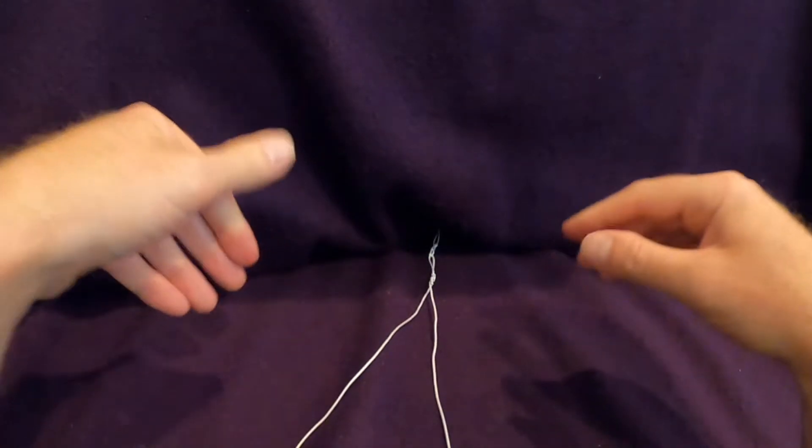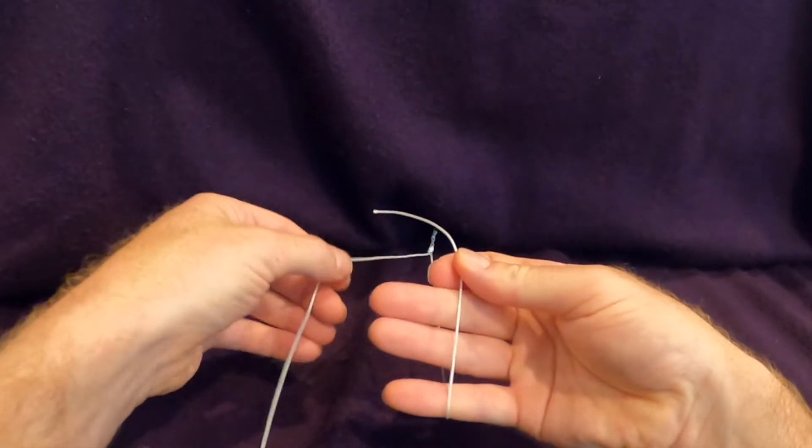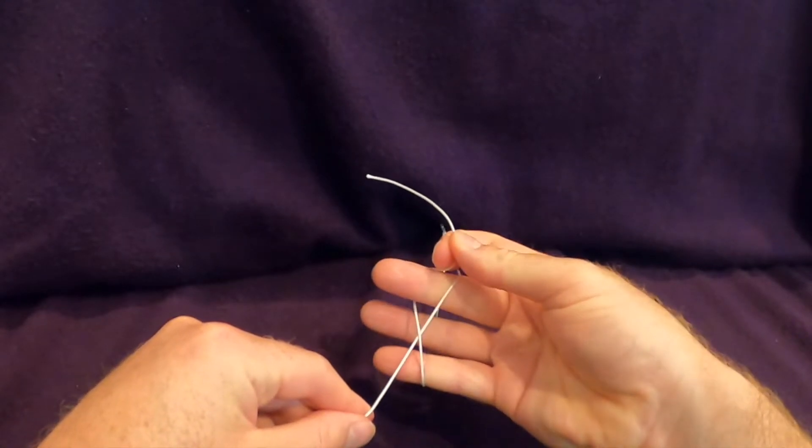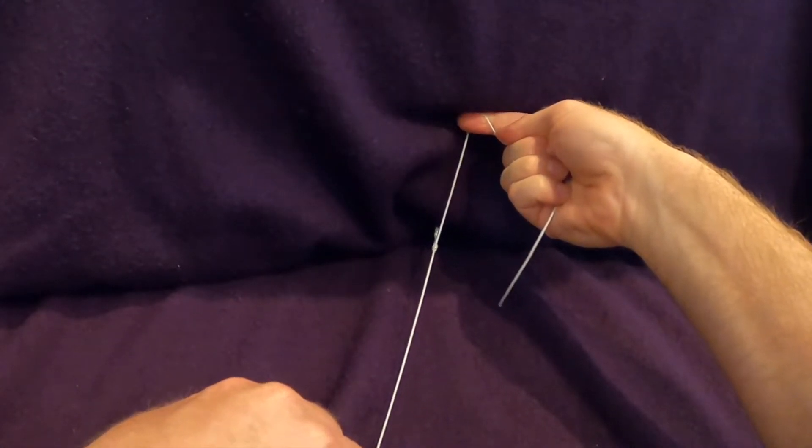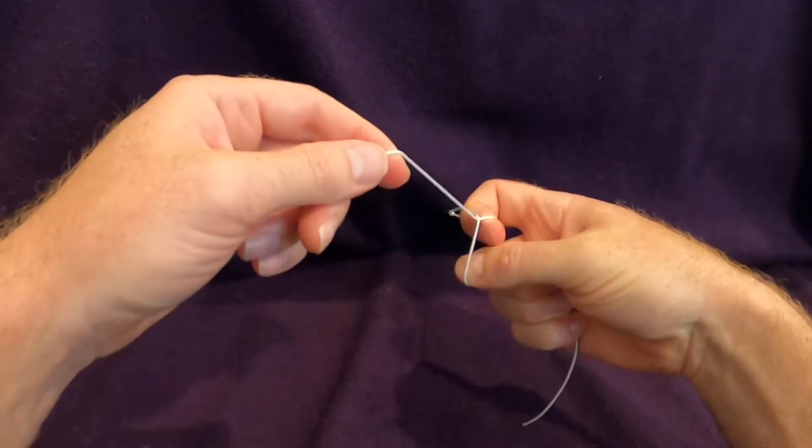Next, the other hand picks up the other suture and drapes it across the palm so that the tail is pointing in the opposite direction. The middle finger brings the suture through, the hand rotates and the knot is pulled tight.